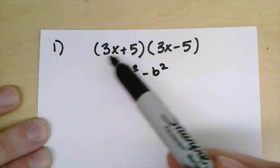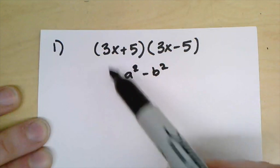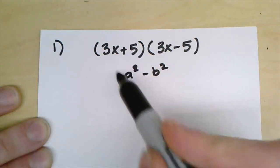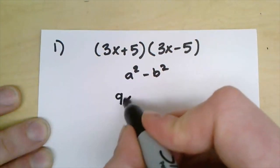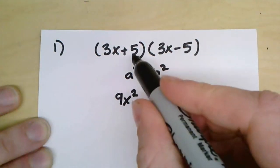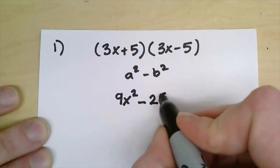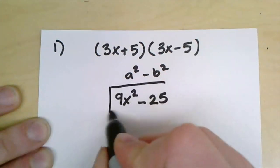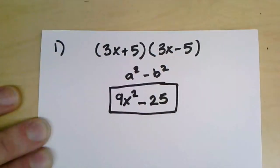In this case our a term is the 3x and our b term is the 5, so all we need to do is square 3x which would be 9x squared, and then we're going to have a minus and now we're going to square the b term which is 5. Five squared is 25, so our answer is going to be 9x squared minus 25.